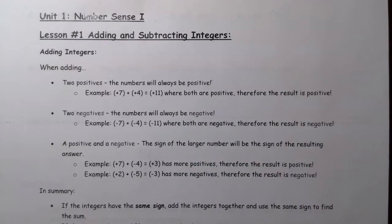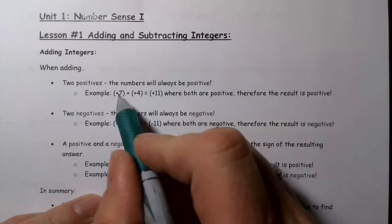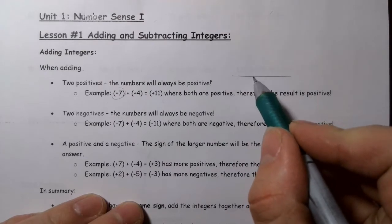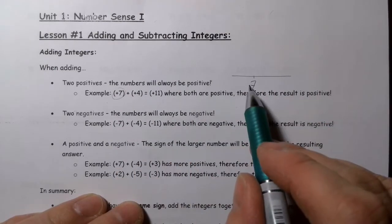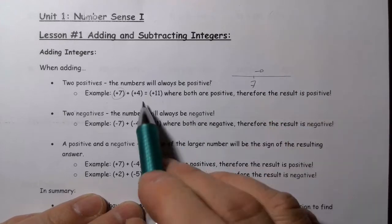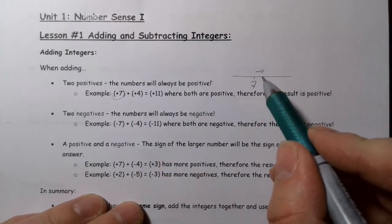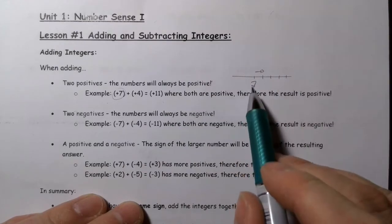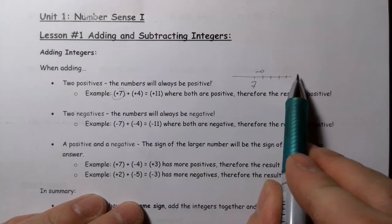One way to think about this is to think of the first number as where you start on the number line. So here's positive seven, and I'm going to add, meaning I'm going to go this way. How much? Positive four. So I'm going to go forward one, two, three, four. If I started at a positive value and I'm adding a positive, I'm going to continue to go in this direction.